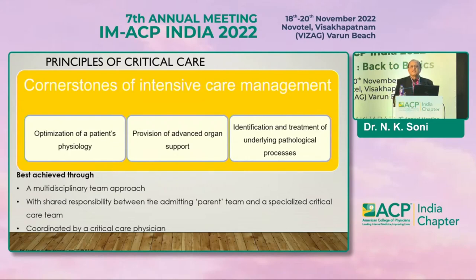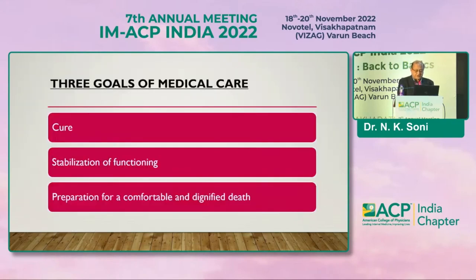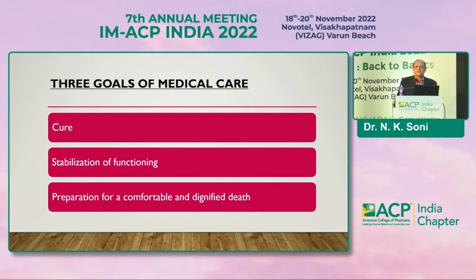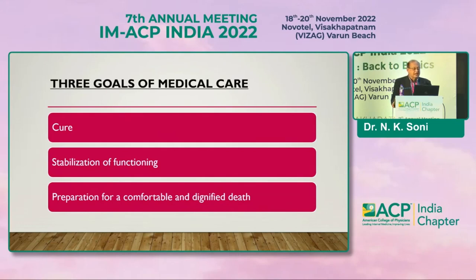The three goals for medical care are: first, we try to cure the patient of the disease process. Second, if we are not able to cure properly, we try to stabilize the functioning of the organs — stabilize blood pressure if there is hypotension, and likewise. Third, if we are not able to do even that, then we prepare the patient for a comfortable and dignified death.